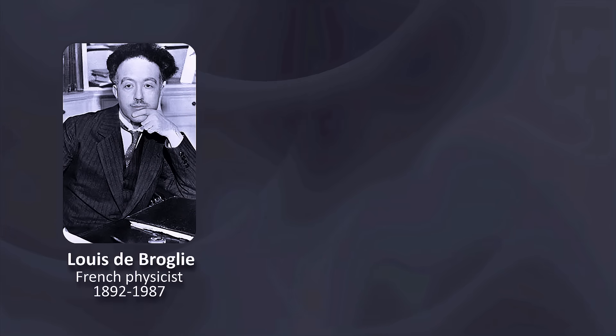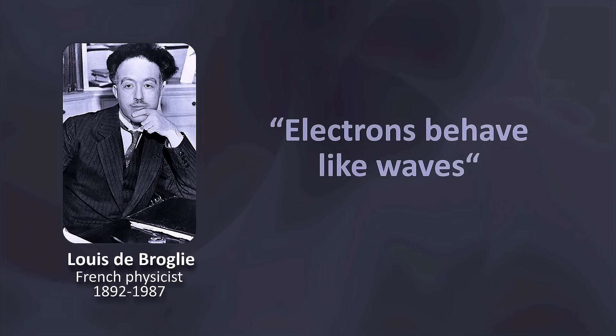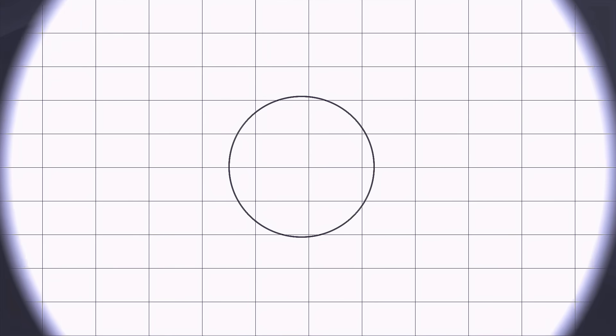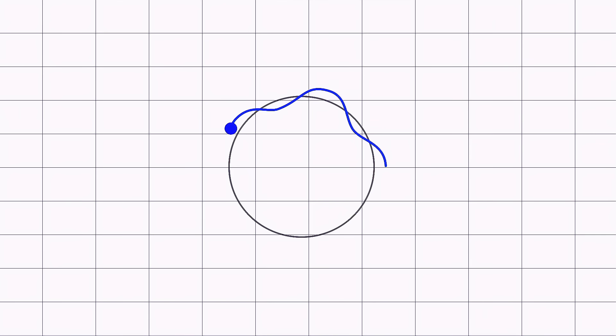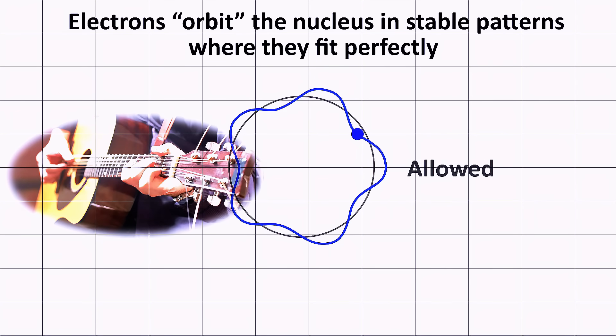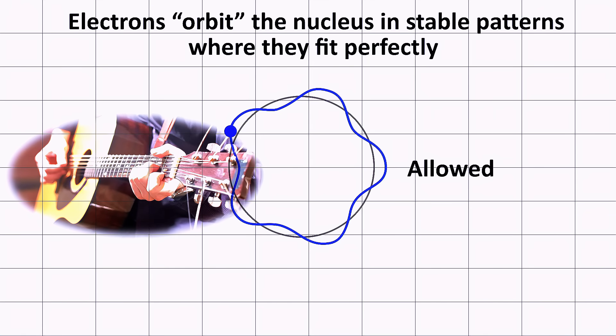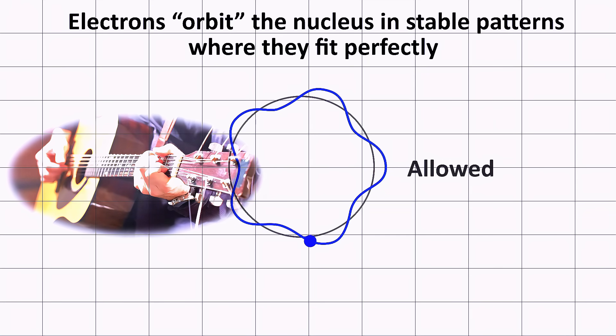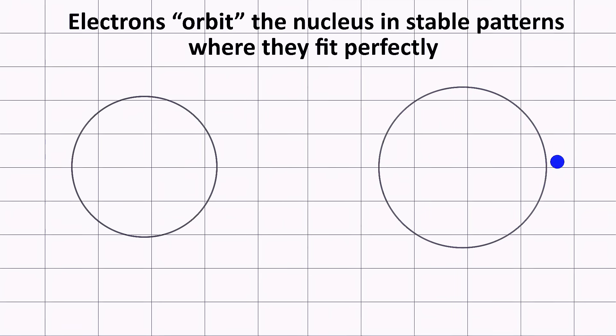To resolve this conundrum, French physicist Louis de Broglie proposed a revolutionary idea. Electrons aren't just particles, they behave like waves too. These waves can only exist at specific discrete energy levels. It's like a guitar string. When you pluck it, only certain harmonics or standing waves are allowed. Electrons work kind of the same way.